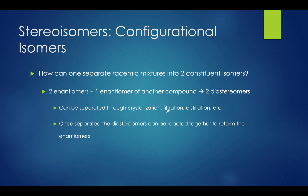A question they will ask on the MCAT is how to separate racemic mixtures into two isomers. You can do this by adding an enantiomer of another compound to two enantiomers of the same compound, which will form two diastereomers. Separation methods include crystallization, filtration, and distillation, along with several other lab techniques. Once separated, the diastereomers can be reacted together to reform the original enantiomers.